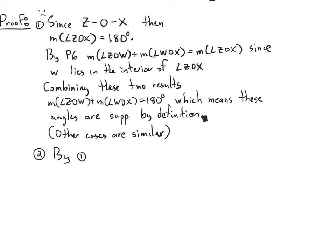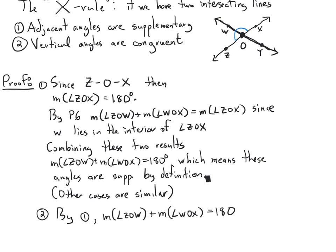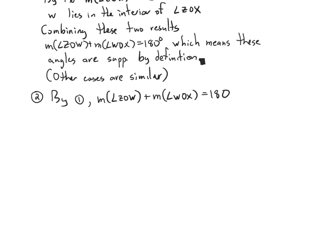By part one — which we just proved — the measure of angle ZOW plus the measure of angle WOX equals 180 degrees. And the measure of angle ZOW plus the measure of angle ZOY is also 180 degrees, since both pairs are adjacent.